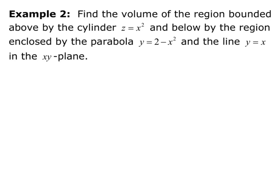Find the volume of the region bounded above by the cylinder z equals x squared and below by the region enclosed by the parabola y equals 2 minus x squared and the line y equals x in the xy plane.